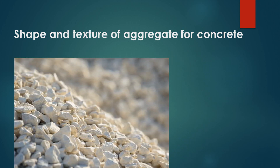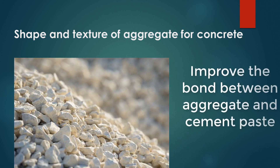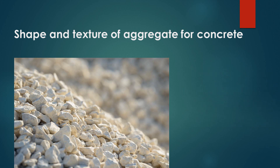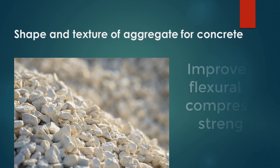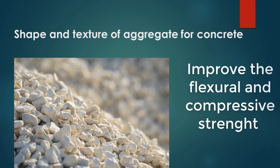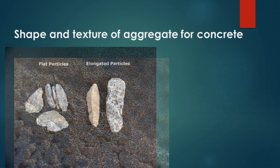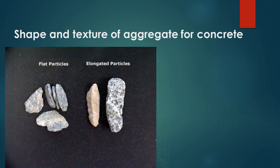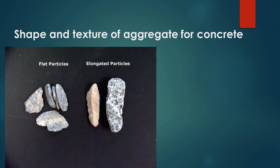The increase of angularity and roughness of surface for aggregates will result in increasing the bond between concrete and aggregates. Also, it will improve the flexural and compressive strength of concrete. Flaky and elongated aggregates should be avoided in a concrete mixture.